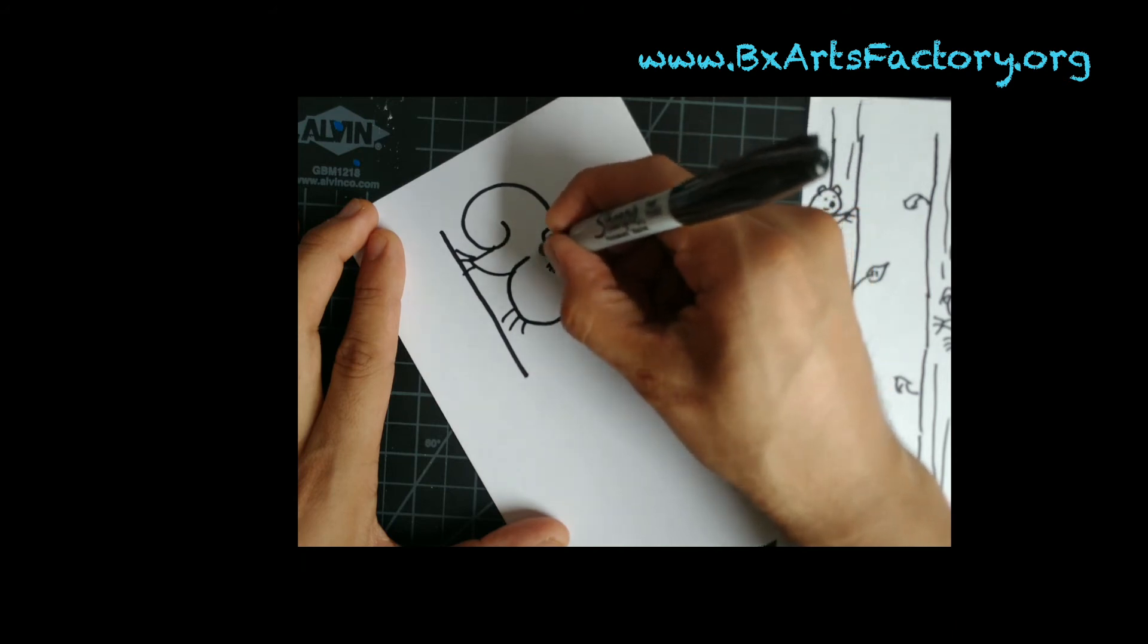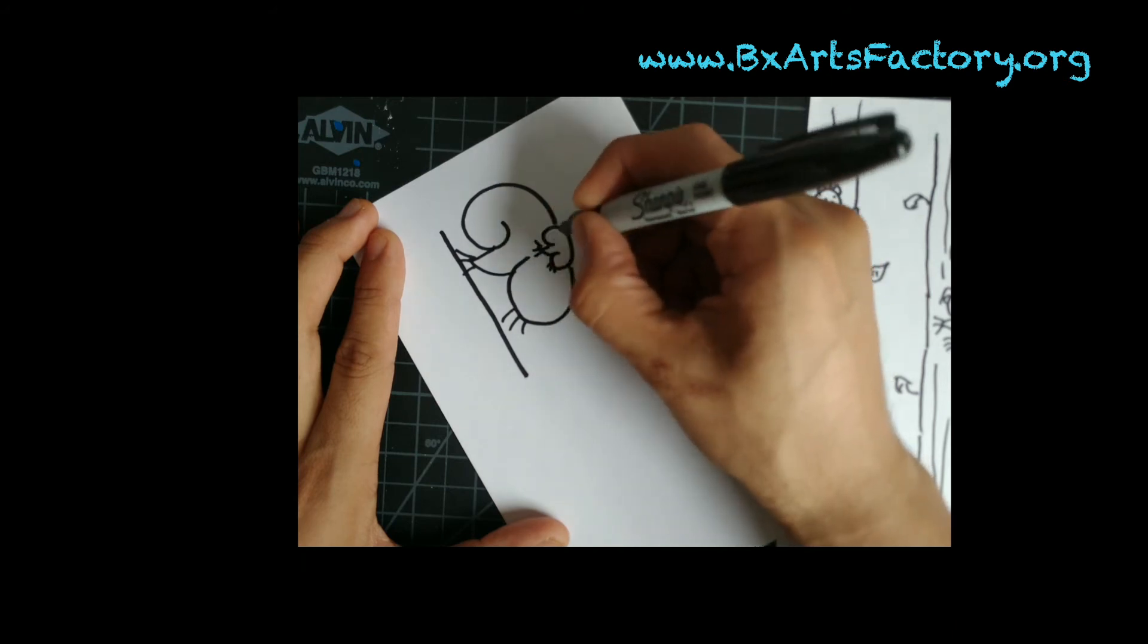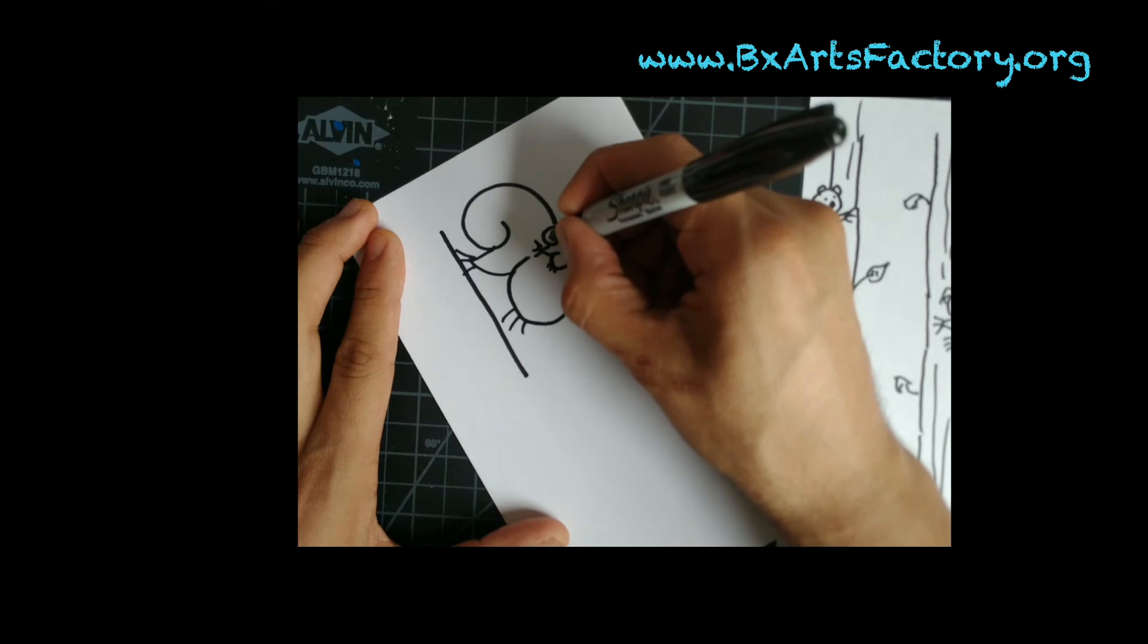One, two, three. Triangle. One, two, three. Curve. Little nose. Eye, eye. Ear, ear.